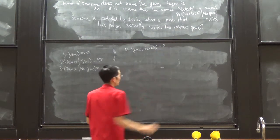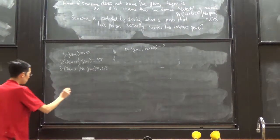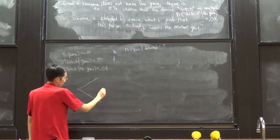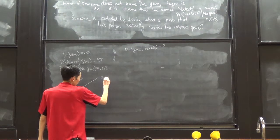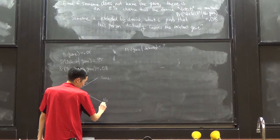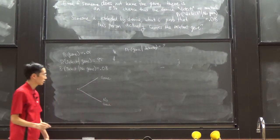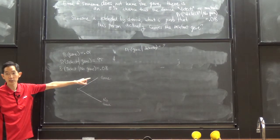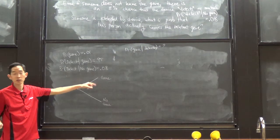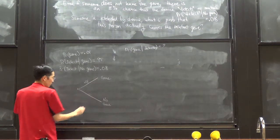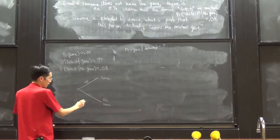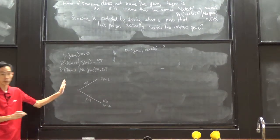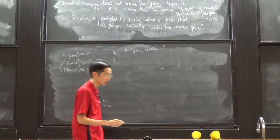What is the probability that someone actually has that gene? Now we are going to draw our probability tree, and our first split will be those who have the gene and those who do not have the gene. The probability that someone carries the gene is 0.01, and the probability that someone does not have the gene is 0.99, because 1% have the gene and 99% do not.